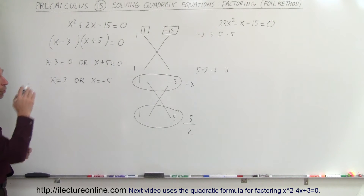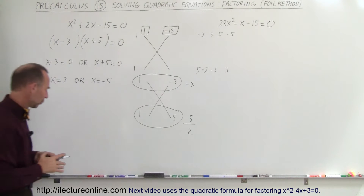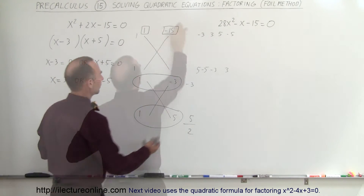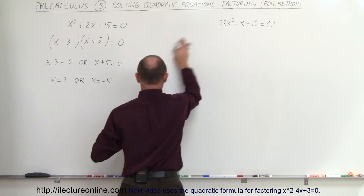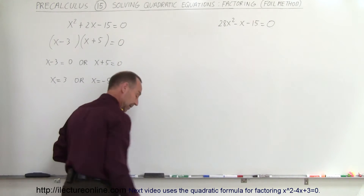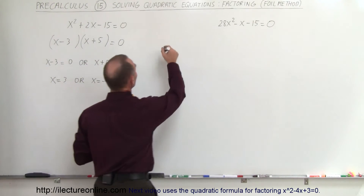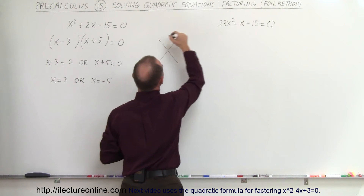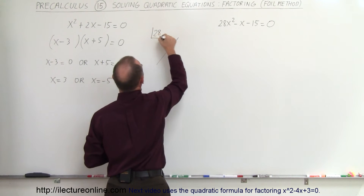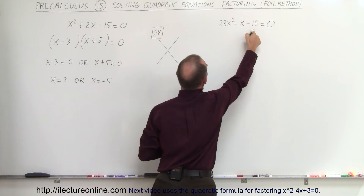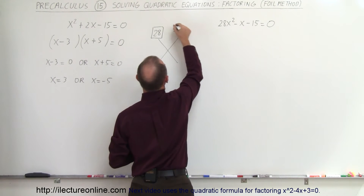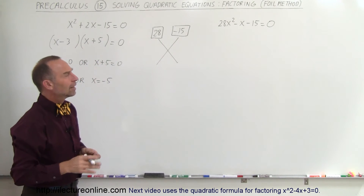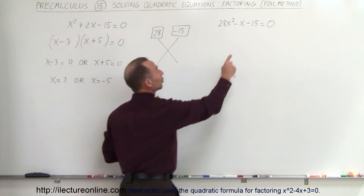Now let's tackle a more complicated problem and see if the FOIL method works for that as well. We use two FOILs like so. On top of the first FOIL you write the coefficient of the x squared term: 28. And on top of the second you put minus 15, the constant term. The middle term kind of decides which way you want to go.